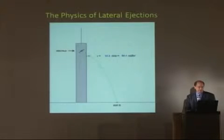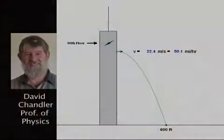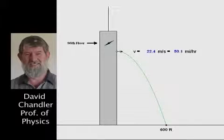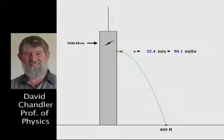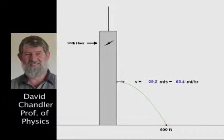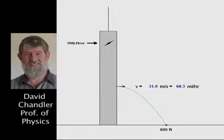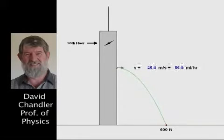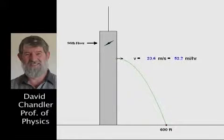Let's take a look at the physics of this. Girders weighing several tons were found 600 feet from the base of the North Tower. How fast they were ejected depends on where they originated. If they came from high in the building, they were thrown outward at about 50 miles per hour. If they came from lower down, the speed had to be even greater. Gravity alone cannot account for such high lateral ejection speeds.